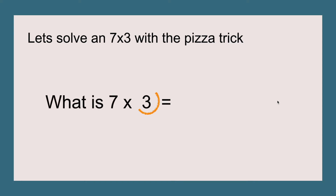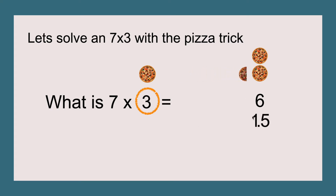Let's solve seven times three with the pizza trick. Circle the three and three times two equals six. After that, take the half of three, which is 1.5. Since three is an odd number, we take the decimal dot away from 1.5, making it fifteen. Then six plus fifteen equals twenty-one, so seven times three equals twenty-one.